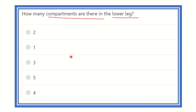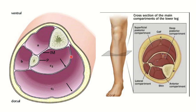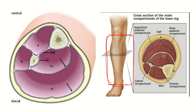The lower leg extends from the knee joint up to the ankle joint. So we need to find out the compartments present in this leg, which runs from the knee joint to the level of the ankle joint. Typically, we can see there is the anterior compartment here.